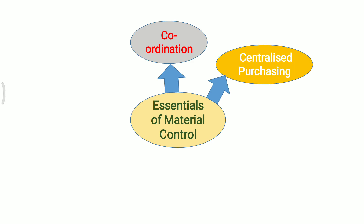The second point is Centralized Purchasing. In order to economize the buying and to avoid reckless buying of raw materials, the purchasing function is to be centralized.